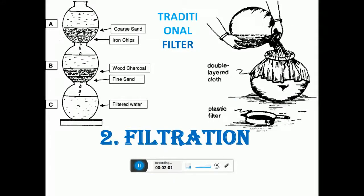The next method is filtration. We can filter water through a clean, thin cloth. We can also use a traditional filter containing sand and gravel. Filtration removes dust and other suspended particles from water. However, this method does not remove germs. For removing germs, water should be boiled after filtration.